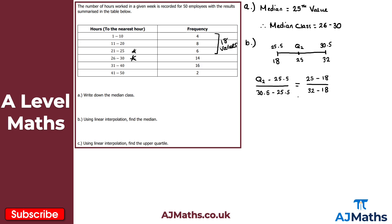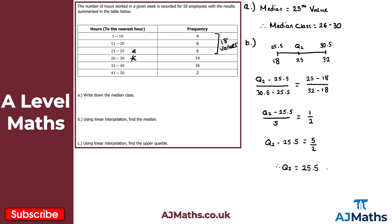Simplifying: 30.5 − 25.5 = 5, so we have (Q2 − 25.5) / 5. On the right-hand side, 25 − 18 = 7 and 32 − 18 = 14, giving 7/14 = 1/2. Multiplying both sides by 5: Q2 − 25.5 = 5/2.